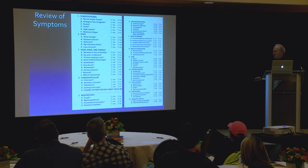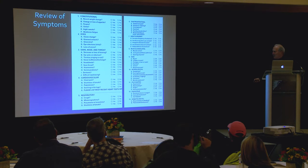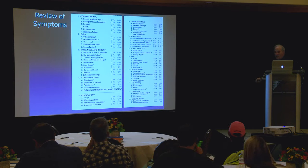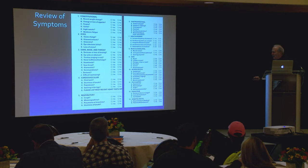Review of systems can be a pain, but you have to look at these things. Who cares about vision change unless you have MS? Skin rash — could you have secondary or tertiary syphilis? It sounds bizarre, but all these things can mean something.